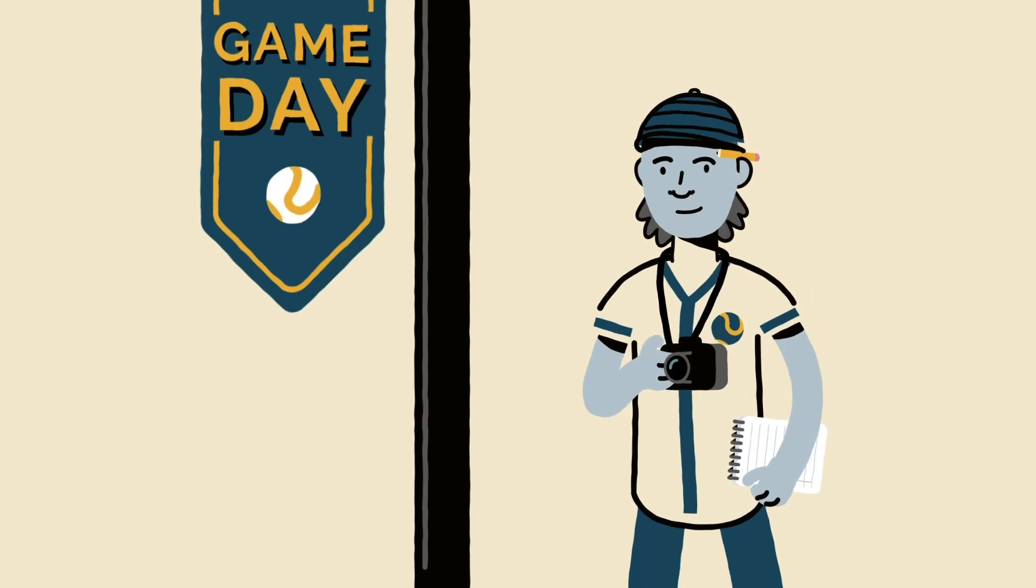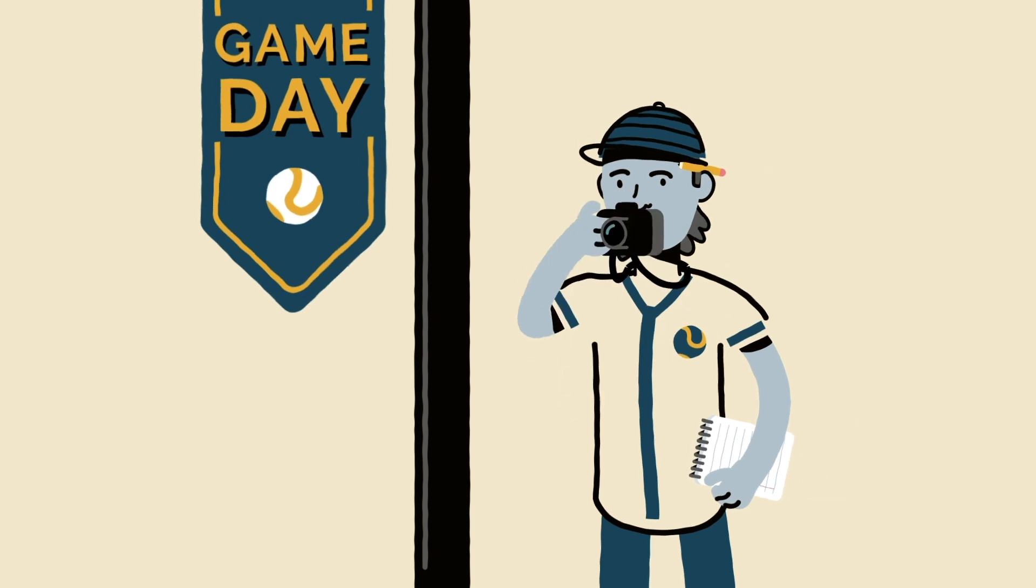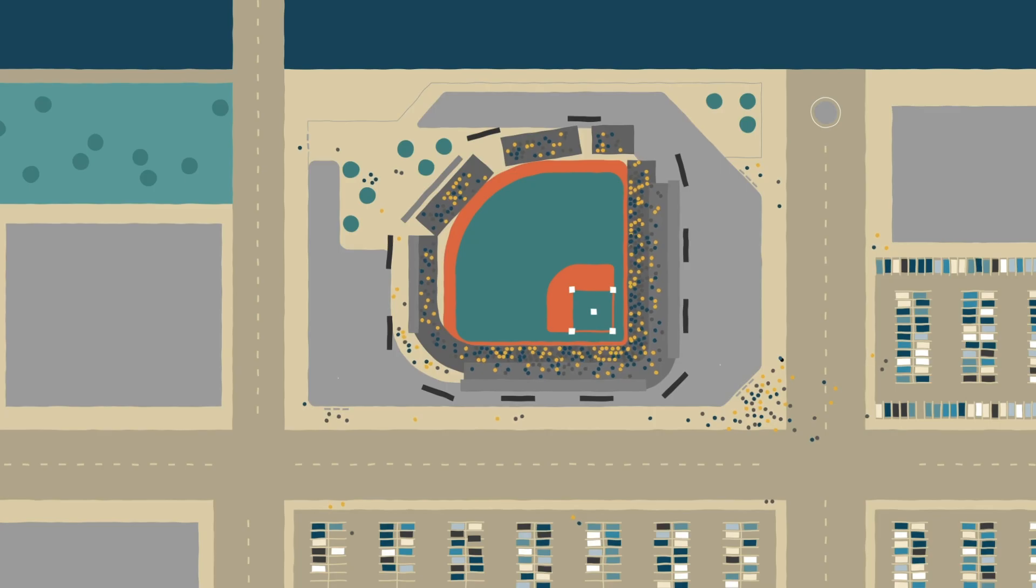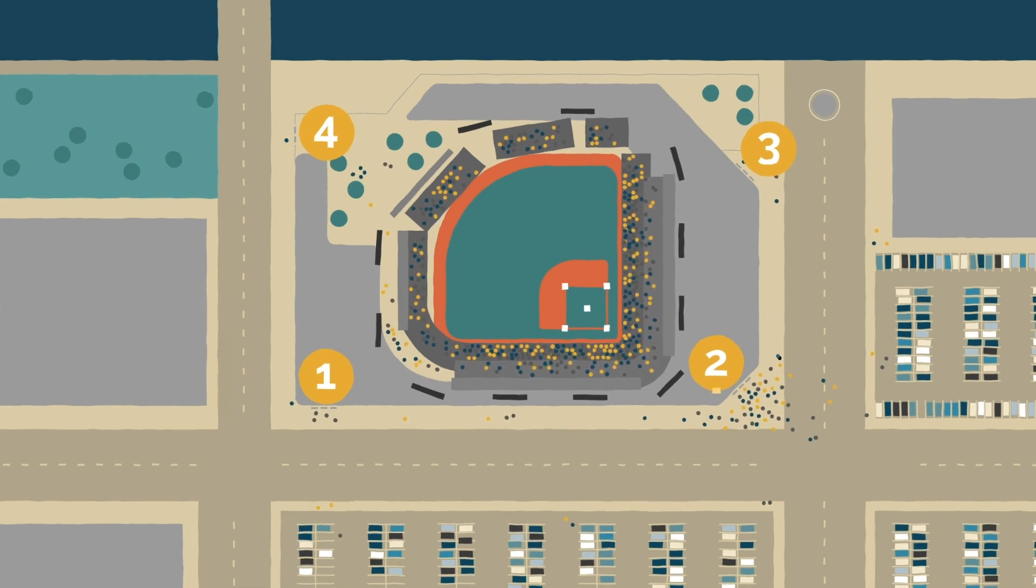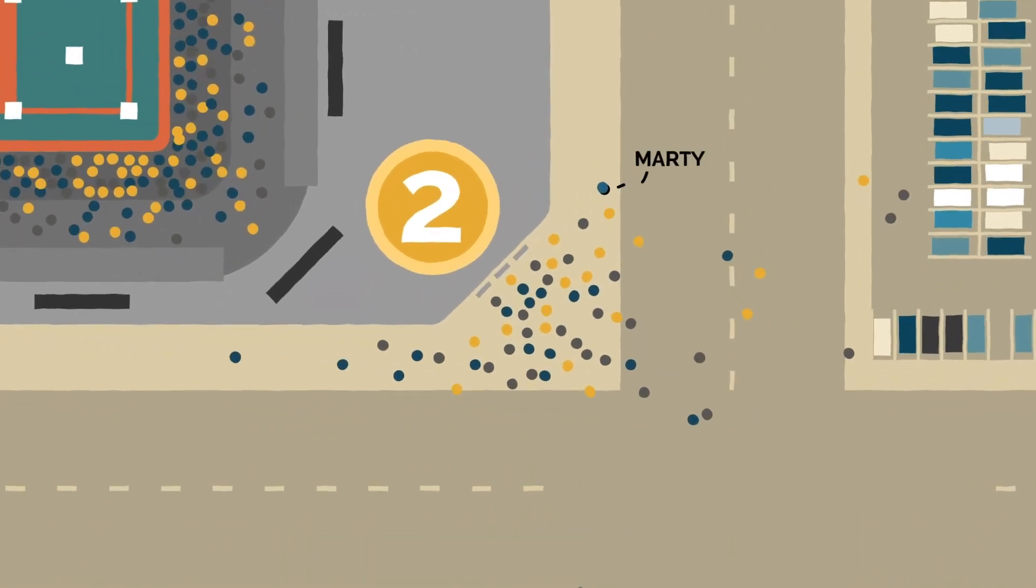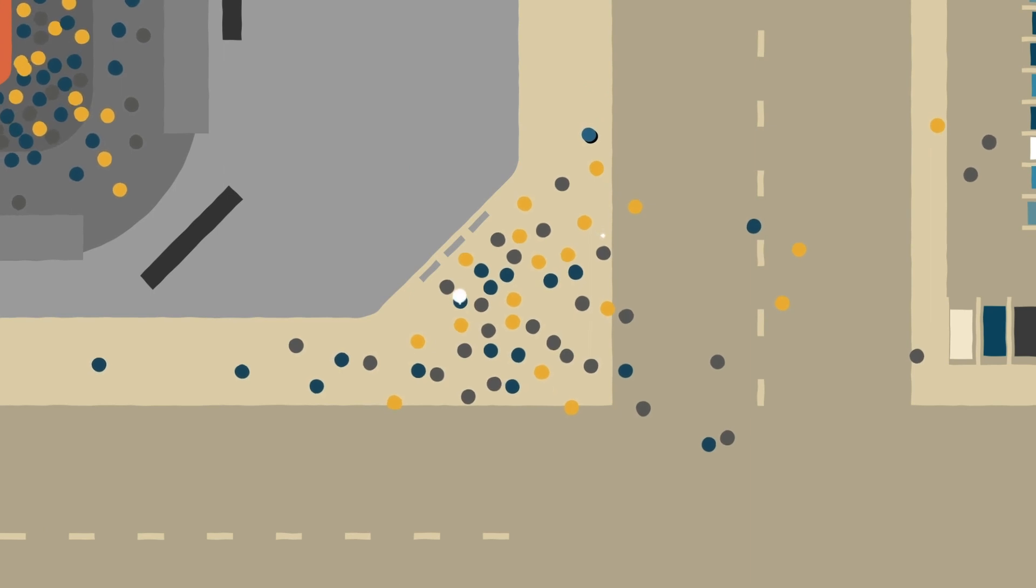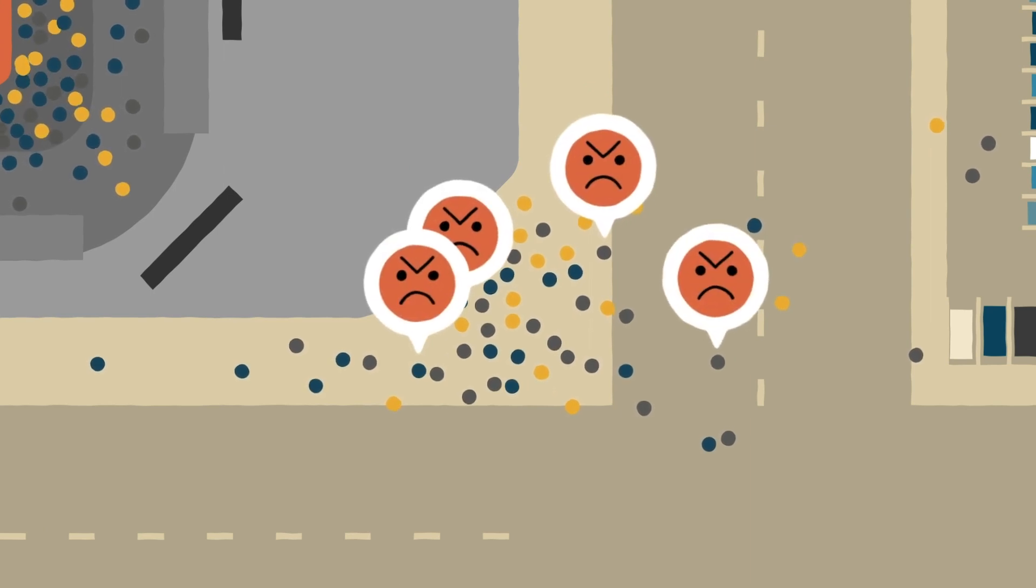At the next game, Marty stood outside with a notepad and camera, ready to observe how the crowd of fans interacted with the stadium. Marty focused on gate number two, the one closest to the parking lot, where the bulk of fans show up within one hour of the game's start. He saw how the congestion at gate number two led to long lines and frustrated fans who missed the beginning of the game.